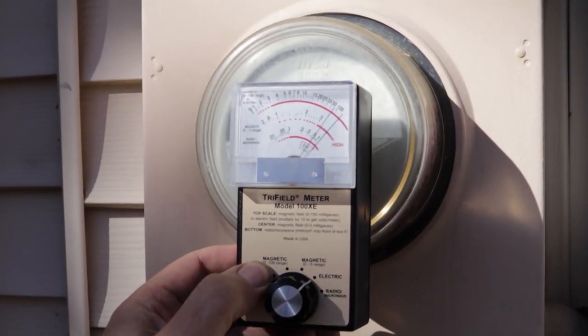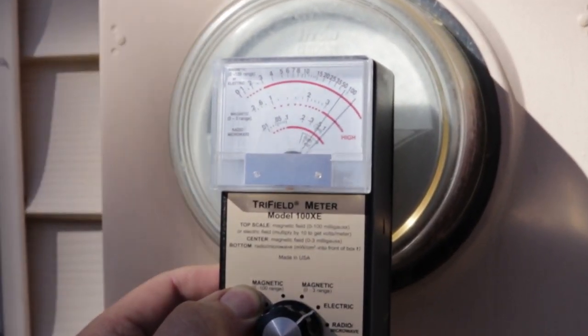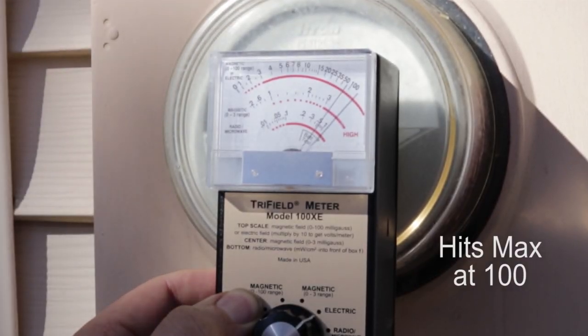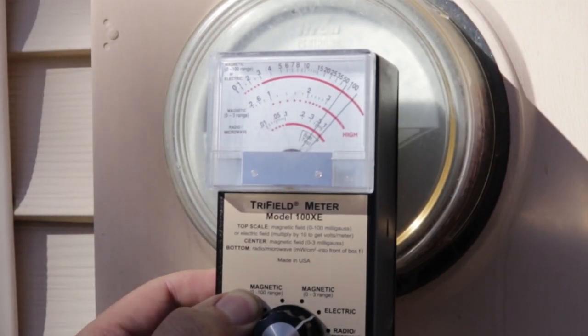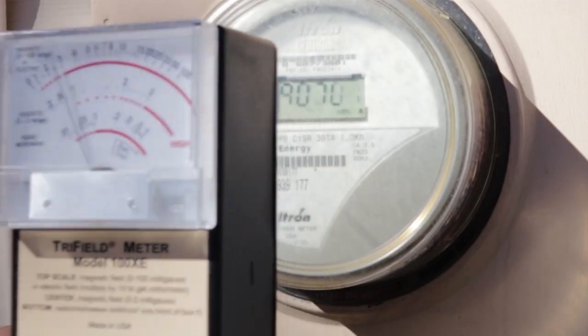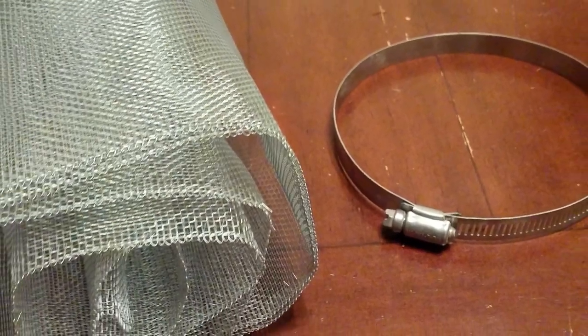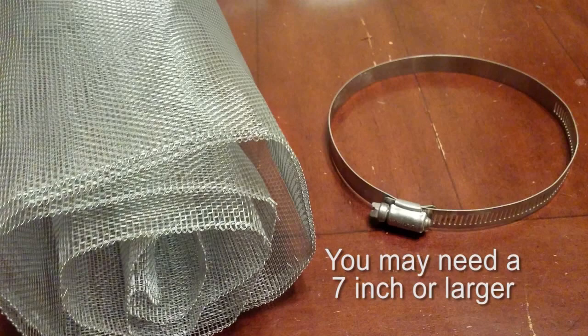First, I used a tri-field meter to measure the EMF levels. I decided to make the simplest Faraday cage possible, so I used metal window screen and a 6-inch hose clamp.